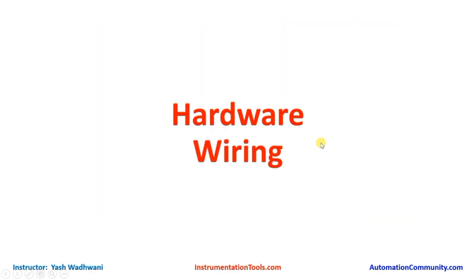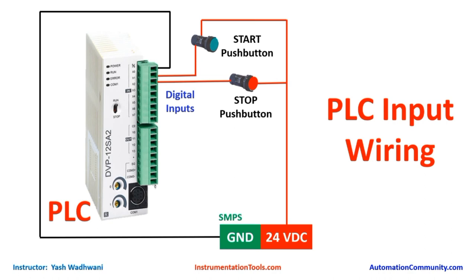Now let us understand the hardware wiring. We have only two inputs — start and stop — since the counter value will be taken from the HMI. In the source-sink configuration, we connect the ground of the SMPS to the common of digital inputs, then connect 24V supply to one terminal of each start and stop button. The other terminal of the start button connects to X0, and the stop button to X1.